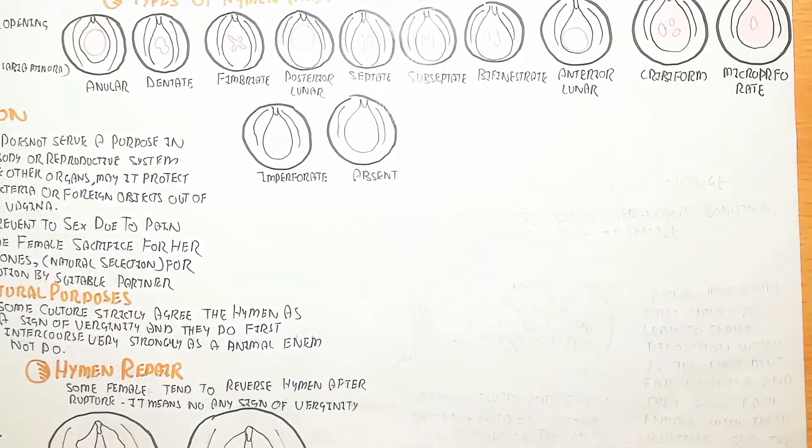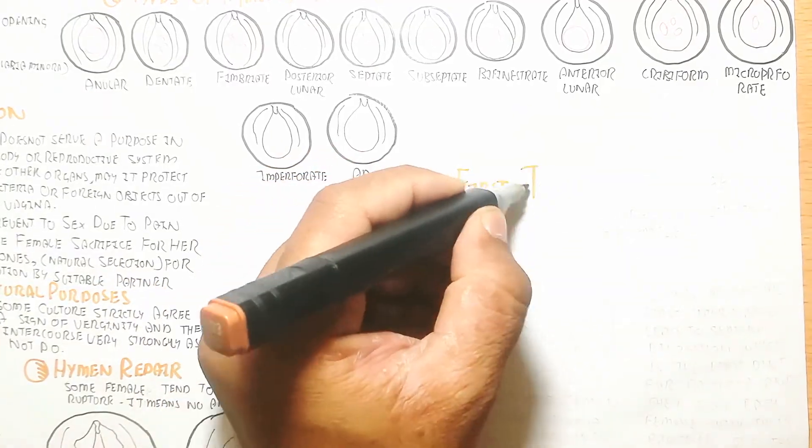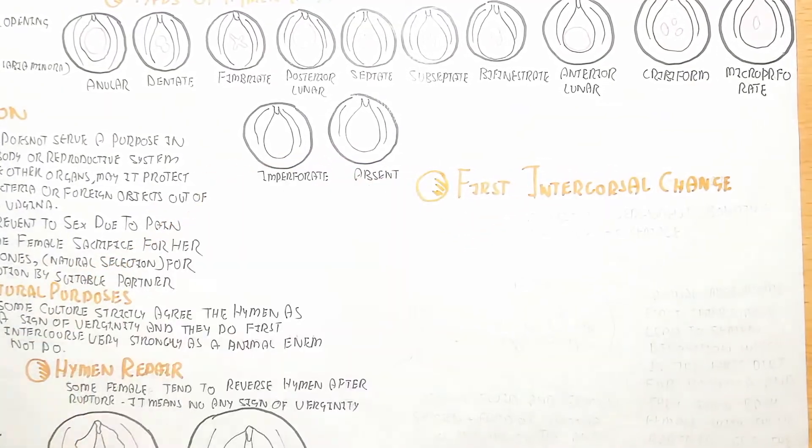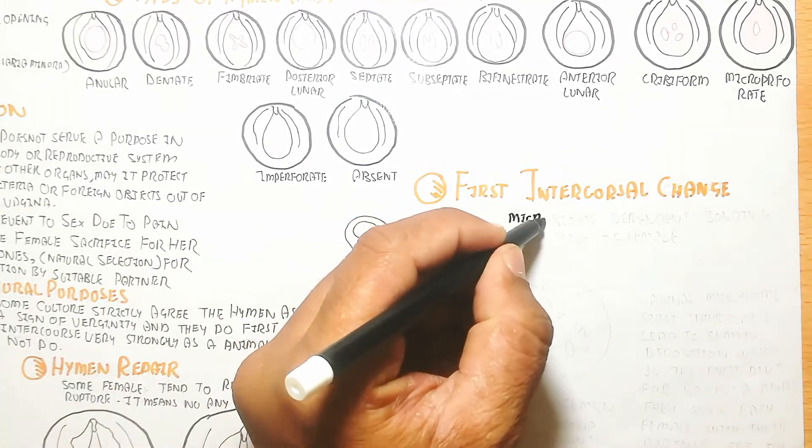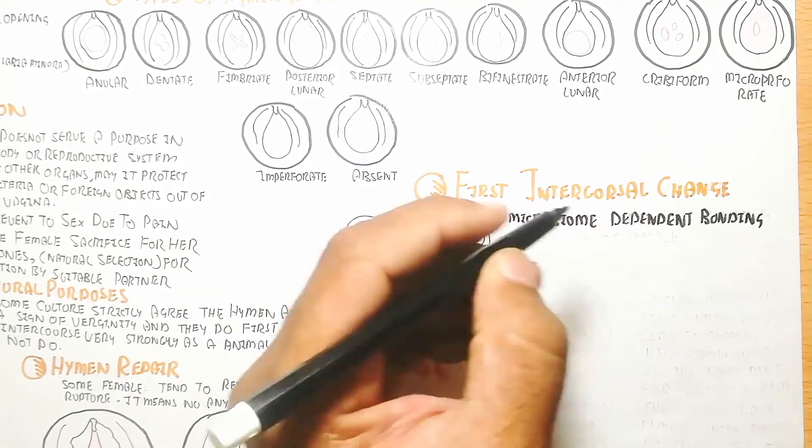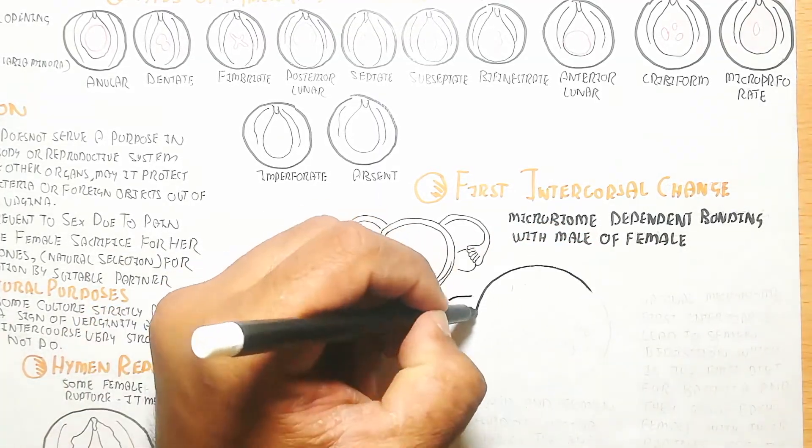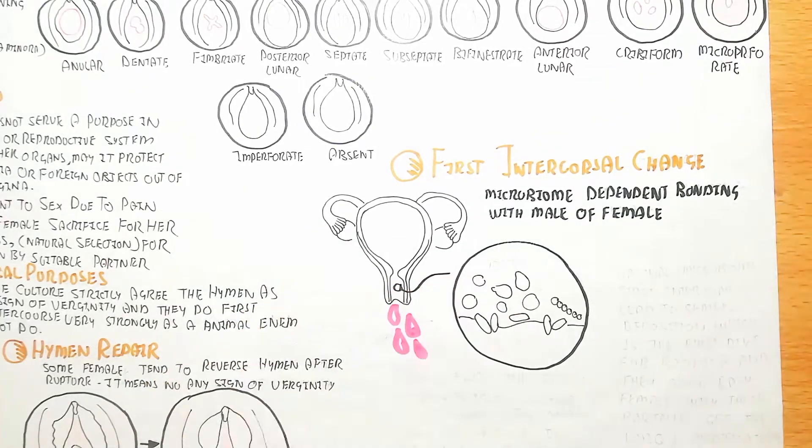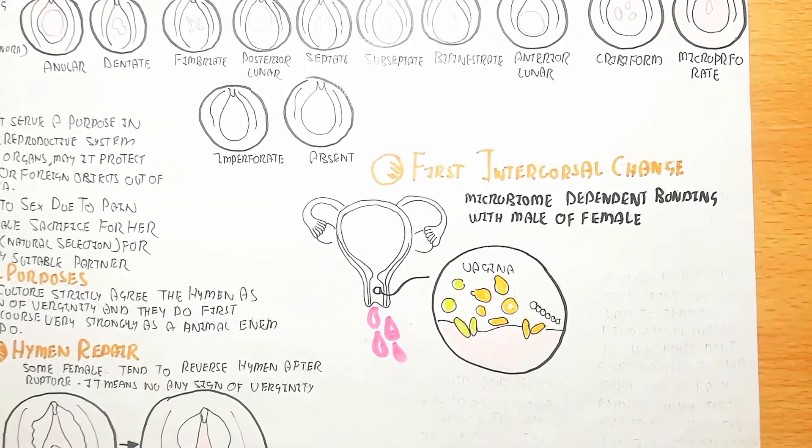The important thing to understand: after loss of virginity and loss of hymen, the first intercourse changes the microbiome, creating a dependent bonding with the male or female. Bleeding during first intercourse, vaginal fluid, and semen influence the microbiome.